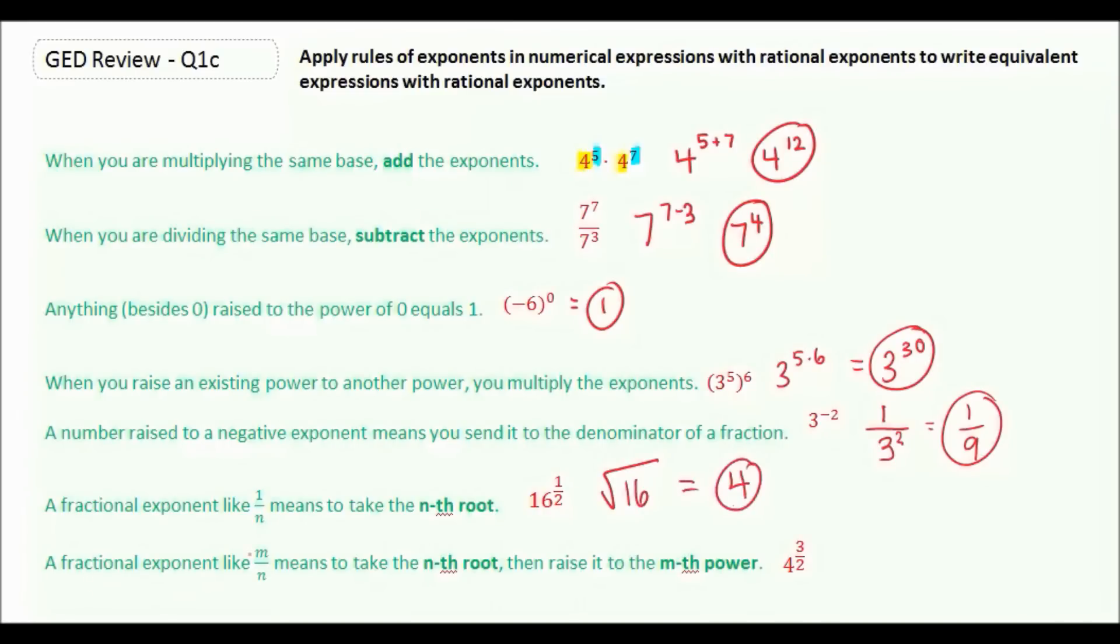Finally, a fractional exponent like m over n means to take the nth root first, then raise it to the mth power. So here, this would mean to take the square root of 4, but then raise that to the third power. The square root of 4 would be 2. So 2 to the third power would be 2 times 2 times 2, which equals 8.